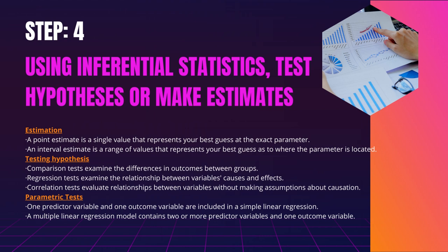Statistical tests are classified into three types: 1. Comparison tests examine the differences in outcomes between groups. 2. Regression tests examine the relationship between variables — causes and effects. 3. Correlation tests evaluate relationships between variables without making assumptions about causation. The statistical test you use is determined by your research questions, research design, sampling method, and data characteristics.